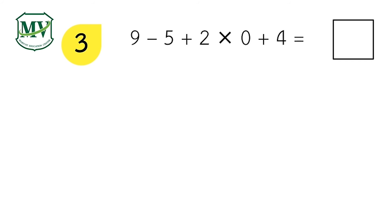Now let's proceed to question No. 3. 9 minus 5 plus 2 times 0 plus 4 equals? That's right. The answer is 8. Let's check your solution.